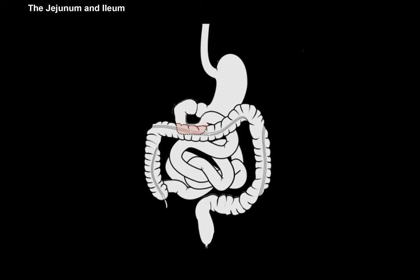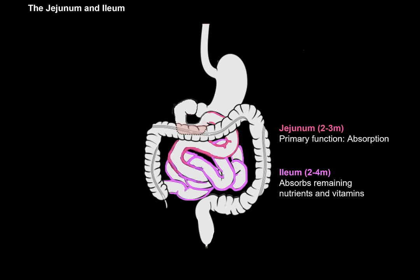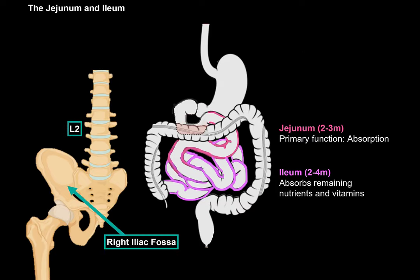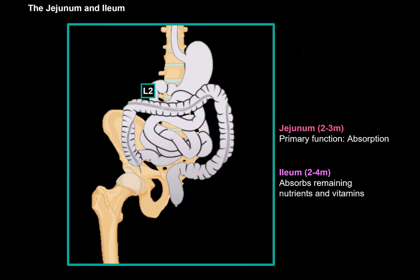One thing you'll notice when studying the small intestine is that there's really no strict demarcation between the jejunum and the ileum, but their functions vary a little. The jejunum can stretch between 2 to 3 meters long, and its primary function is absorption. The ileum is a little bit longer — between 2 to 4 meters — and absorbs any remaining nutrition and vitamins not absorbed by the duodenum or jejunum, particularly vitamin B12. The jejunum and ileum go from the second lumbar vertebra, and the lower part of the ileum rests inside the right iliac fossa — that's actually the reason it's called the ileum.